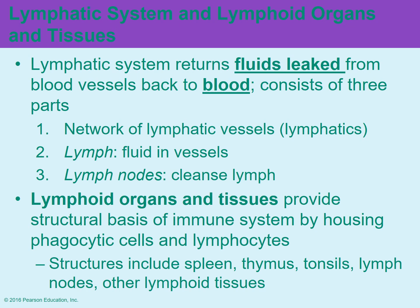The lymphoid organs and tissues help to support the immune system. They tend to house a lot of phagocytic cells that will engulf and carry out phagocytosis — basically chew up and eat anything foreign. It's also going to house your lymphocytes. Lymphocytes are one of the five types of leukocytes, white blood cells, that are involved with the immune system. These lymphoid organs and tissues are scattered throughout the body and include the spleen, the thymus, the tonsils, your lymph nodes, and some additional lymphoid cells.